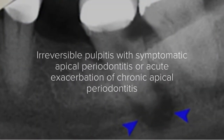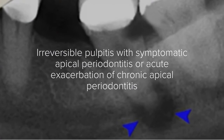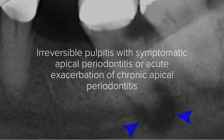If the radiolucency is large, the patient will likely experience pain on biting because it causes pressure on the bone. We then name it symptomatic apical periodontitis, or acute exacerbation of chronic apical periodontitis.